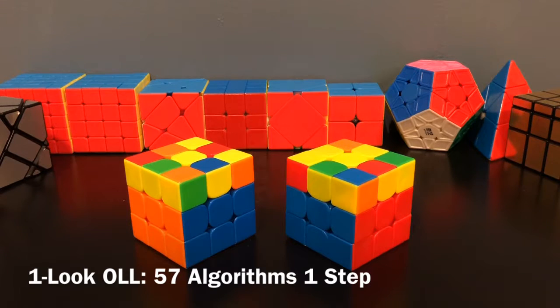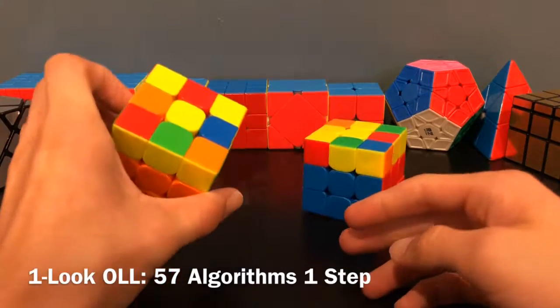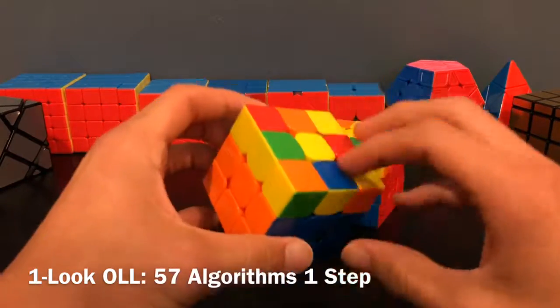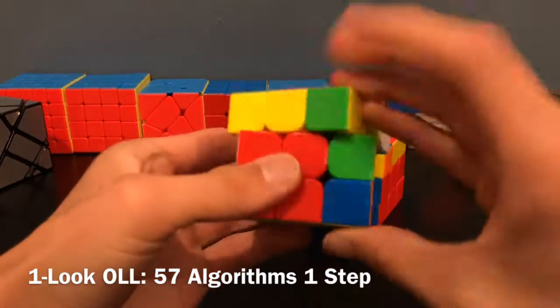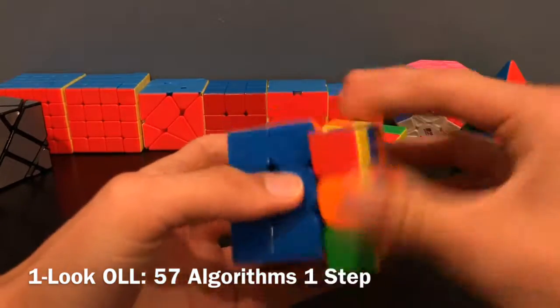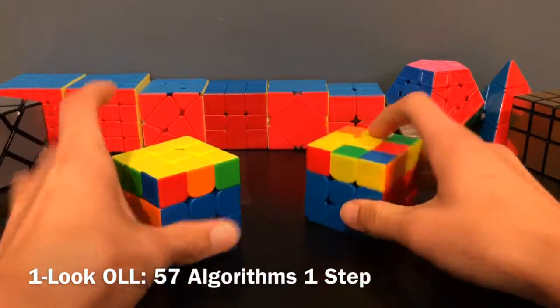You might think that it's a little pointless to memorize so many more algorithms for such a small drop, but when you're dealing with fractions of seconds, this could really make the difference. So you would just look at it, and then look at all the pieces instead of just edges or corners, and then in one algorithm, orient the entire last layer.